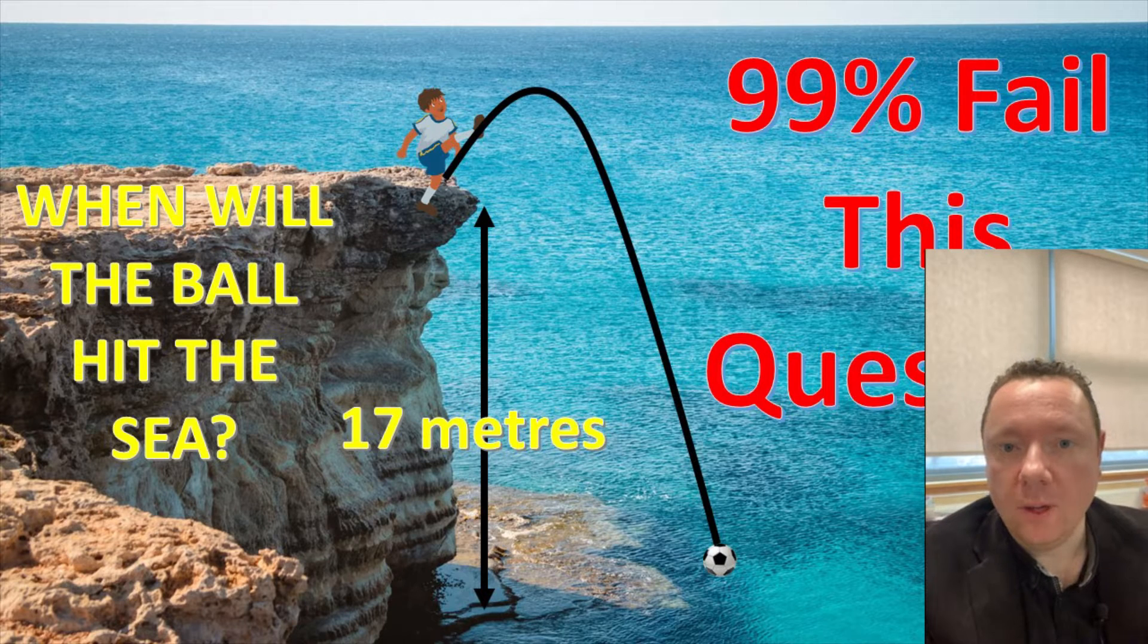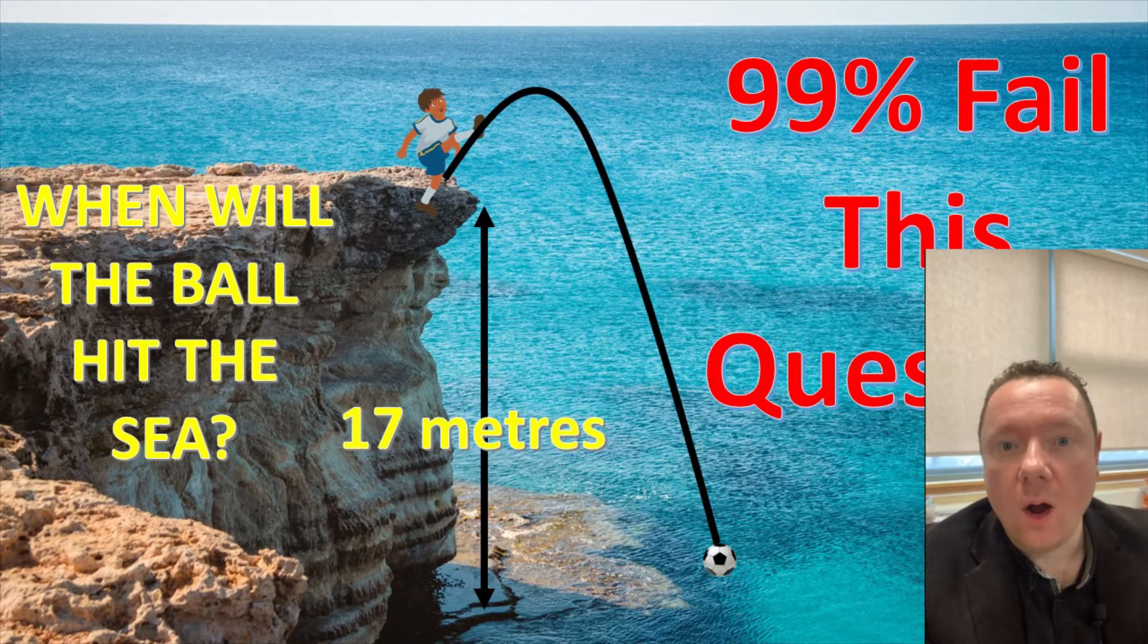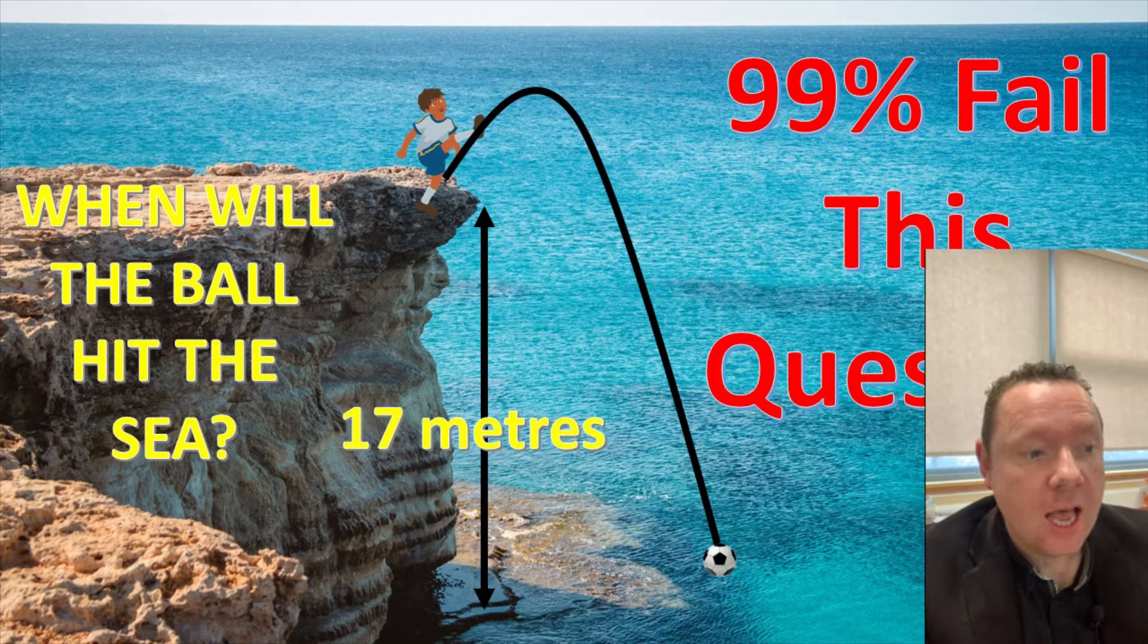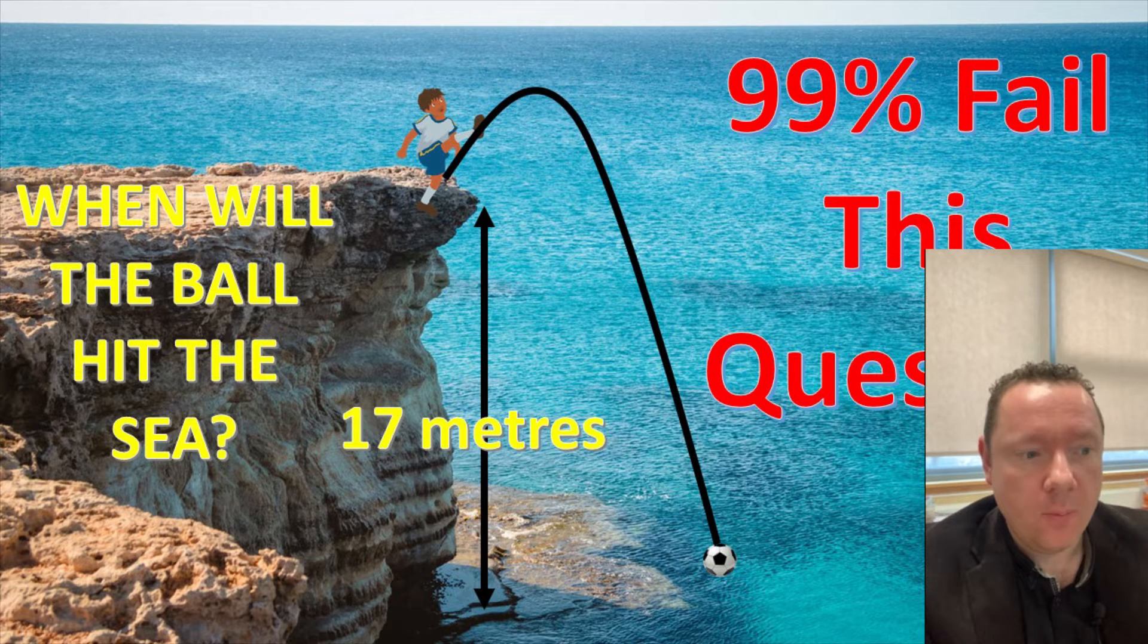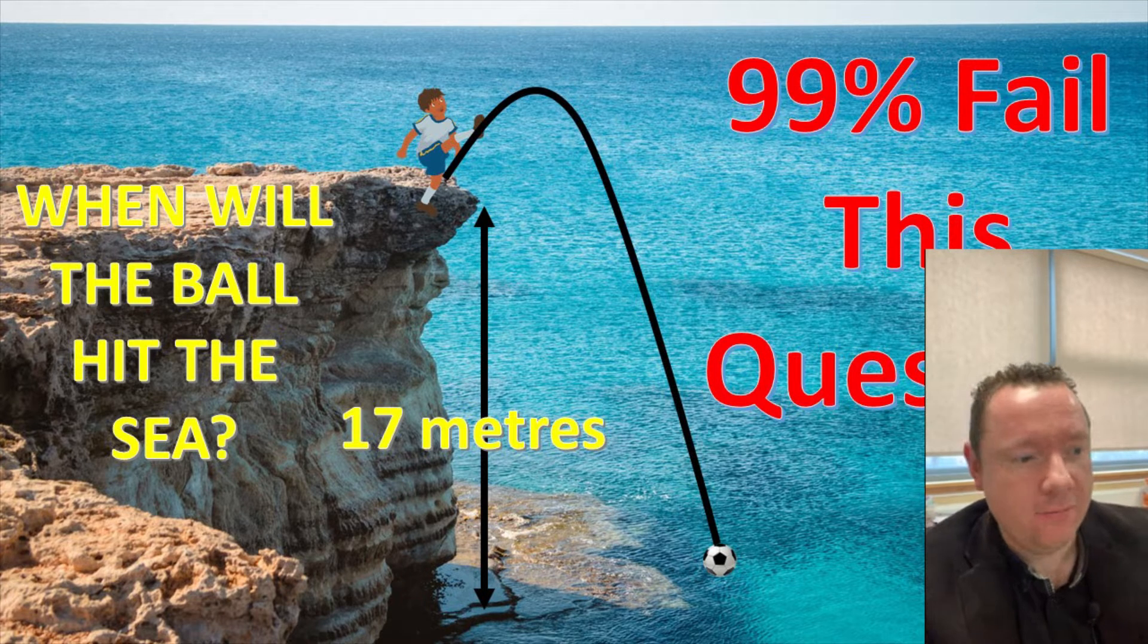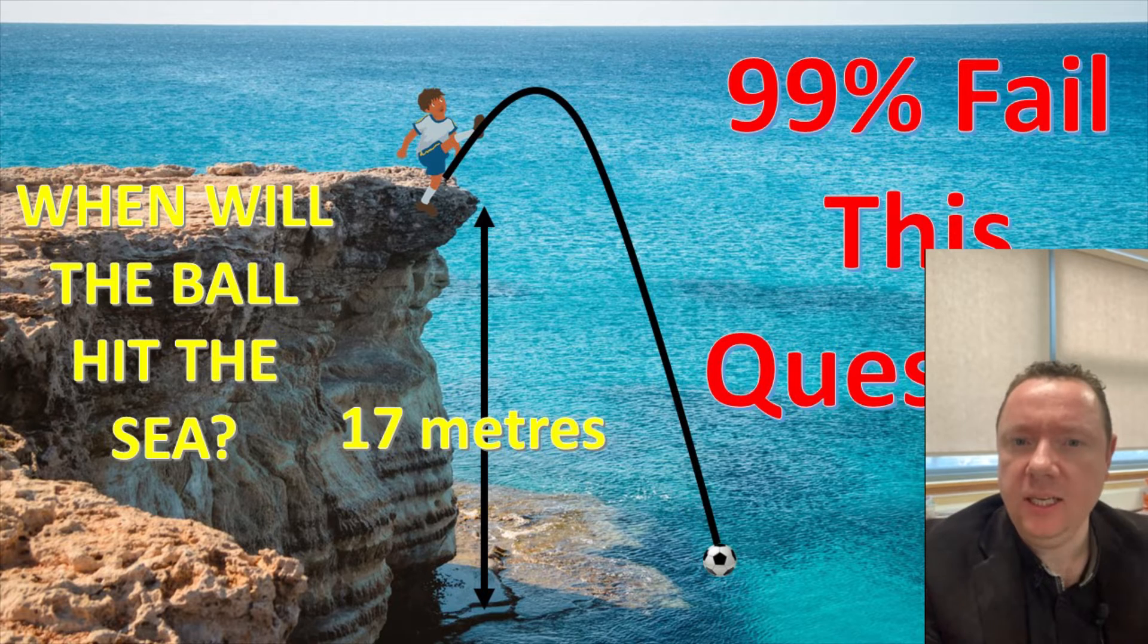Mr Clown here from Clown Maths. This one was from 2019 Paper 1 National 5 Maths, asking a question about a ball getting kicked off a cliff and when the ball will hit the sea.